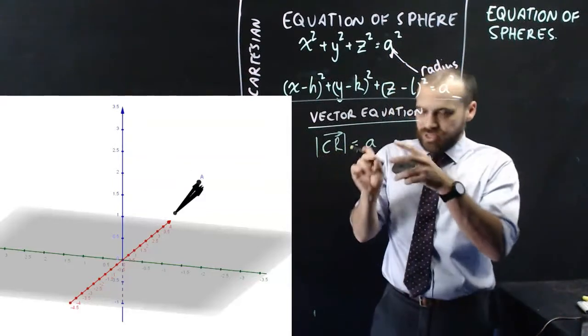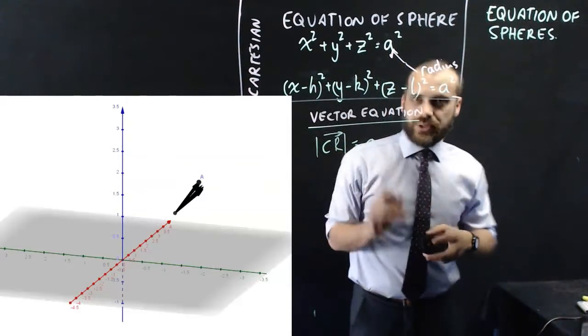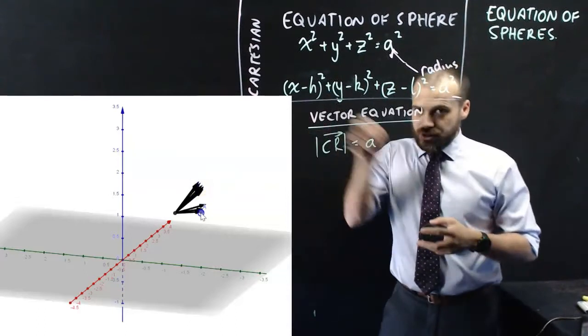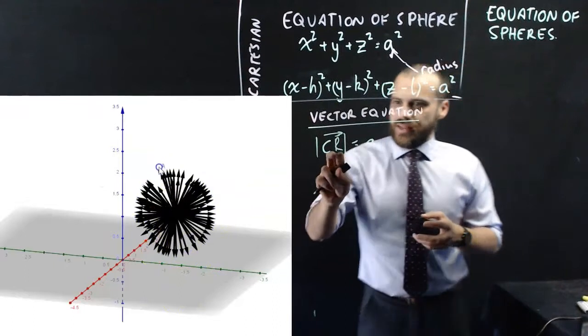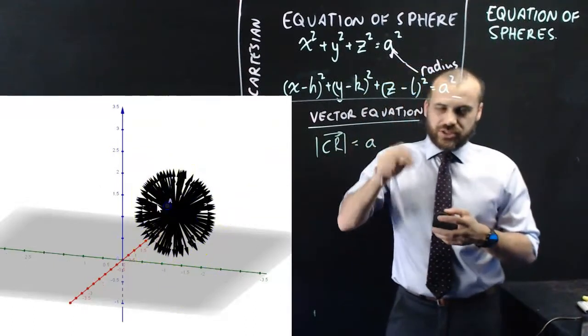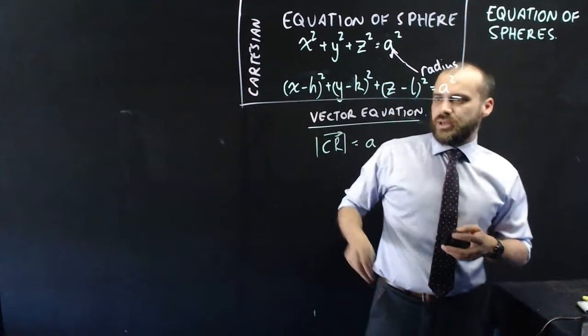So a magnitude of the vector, the length of that vector, is equal to a. I can drag that vector around everywhere I want, around the center, and that r changes, but the center doesn't change. The center is a particular point.